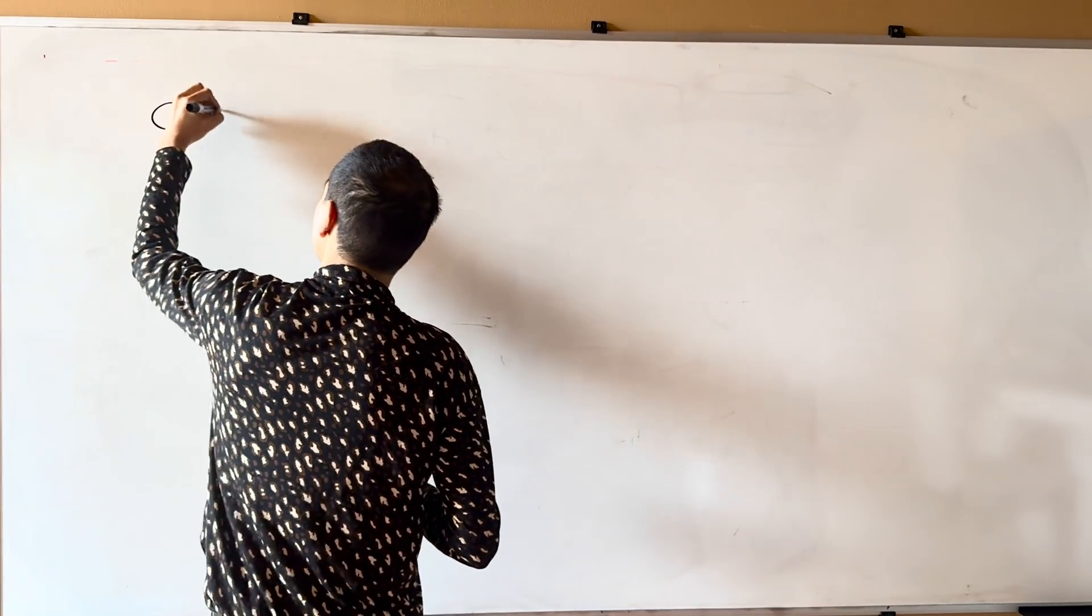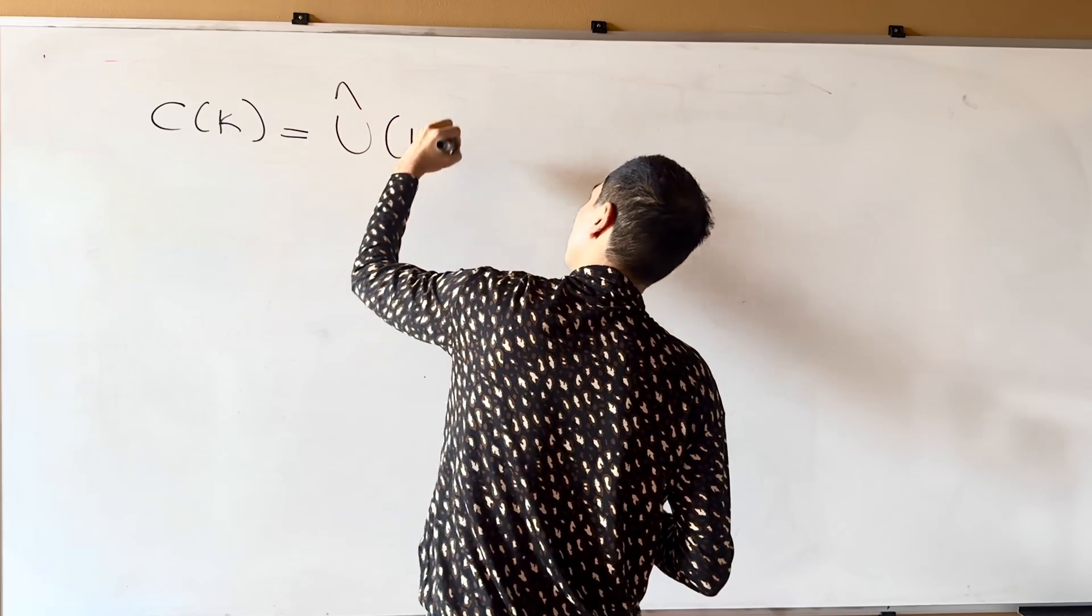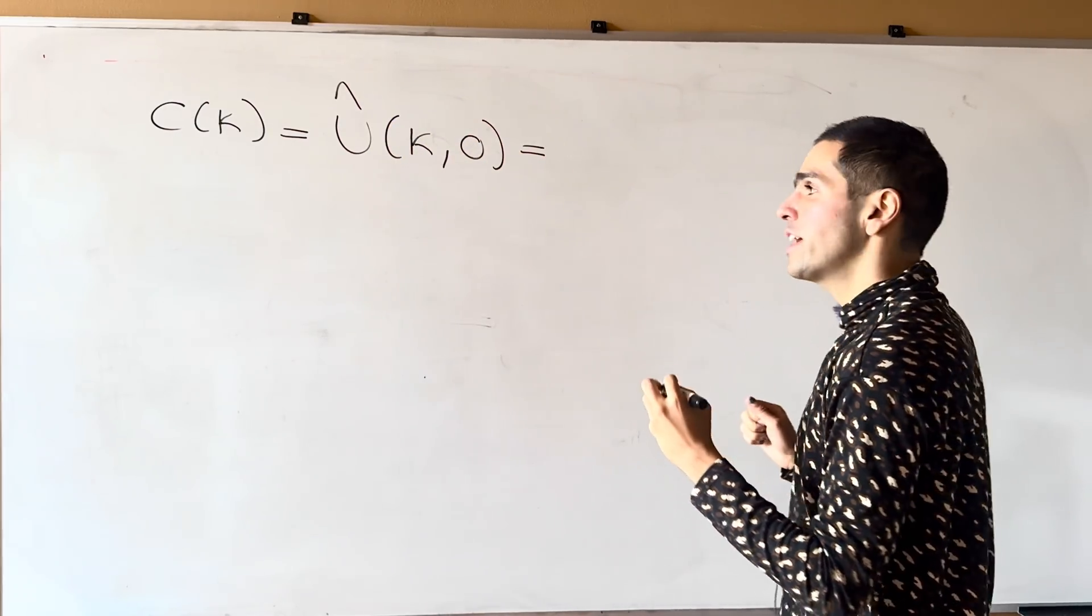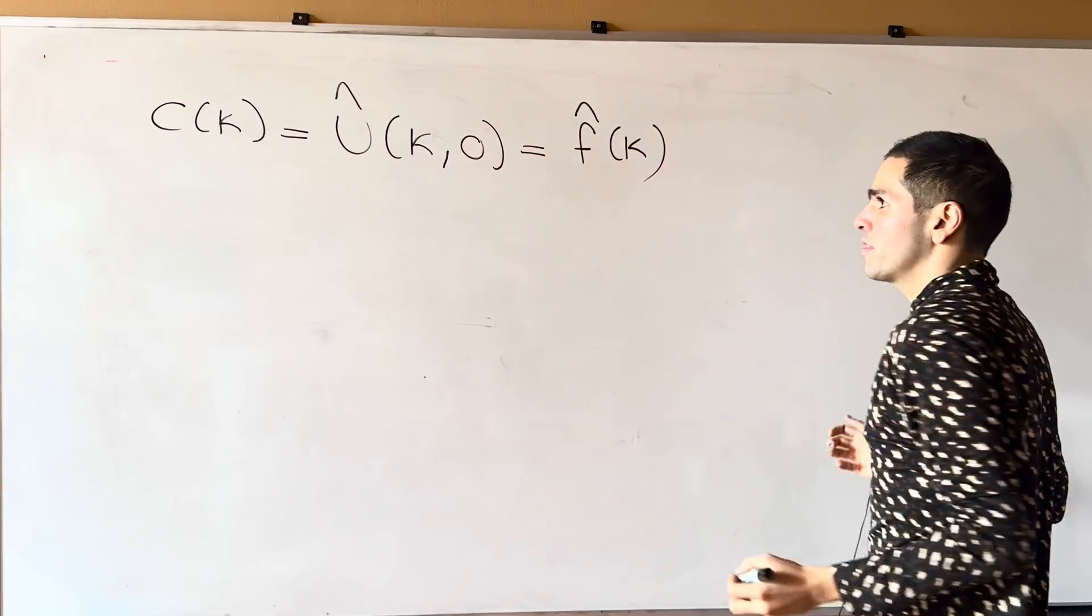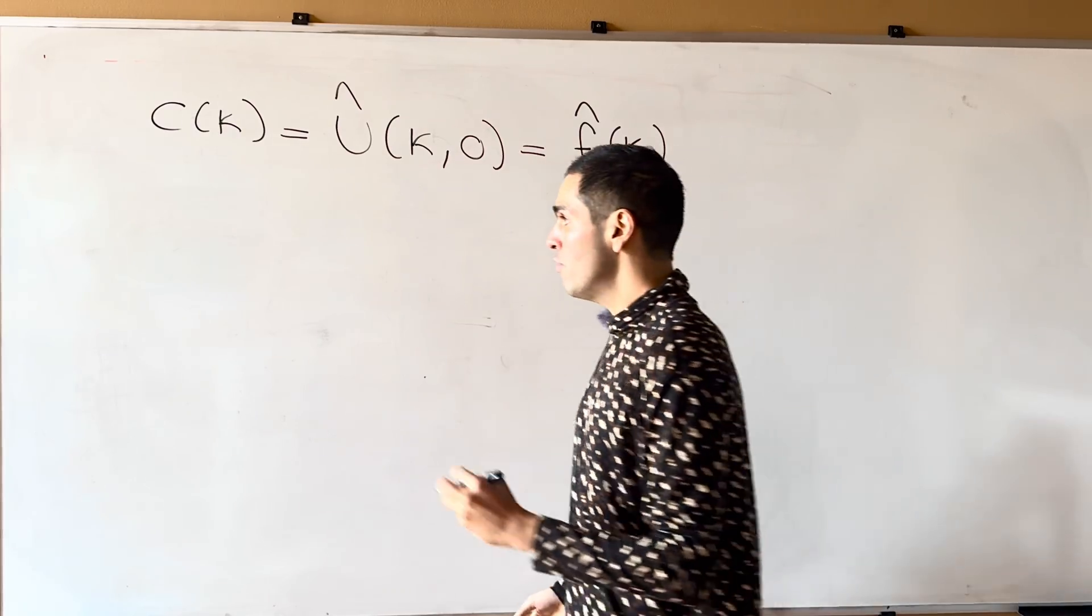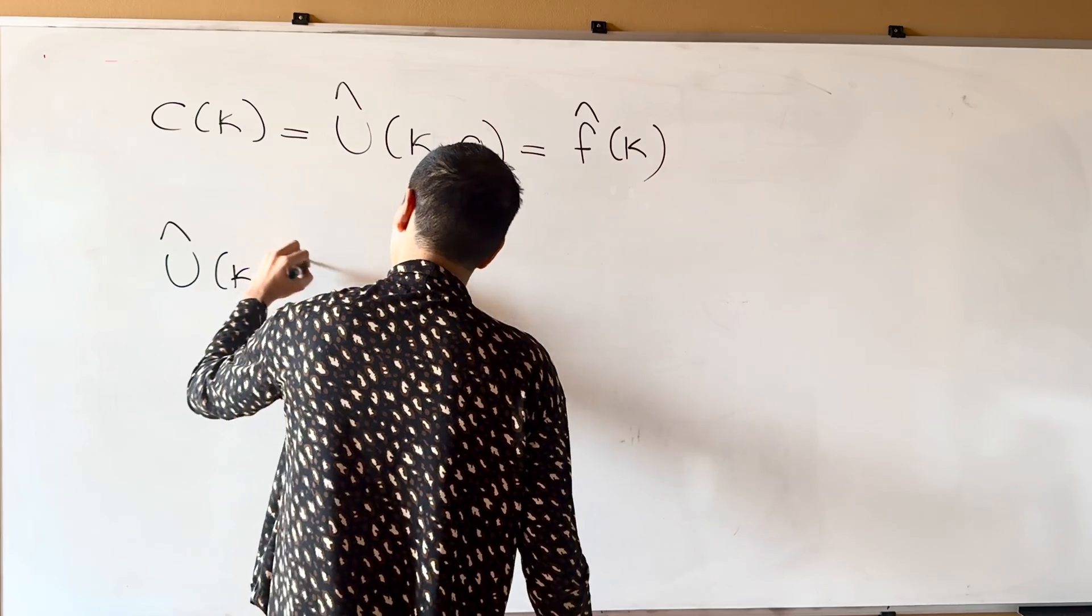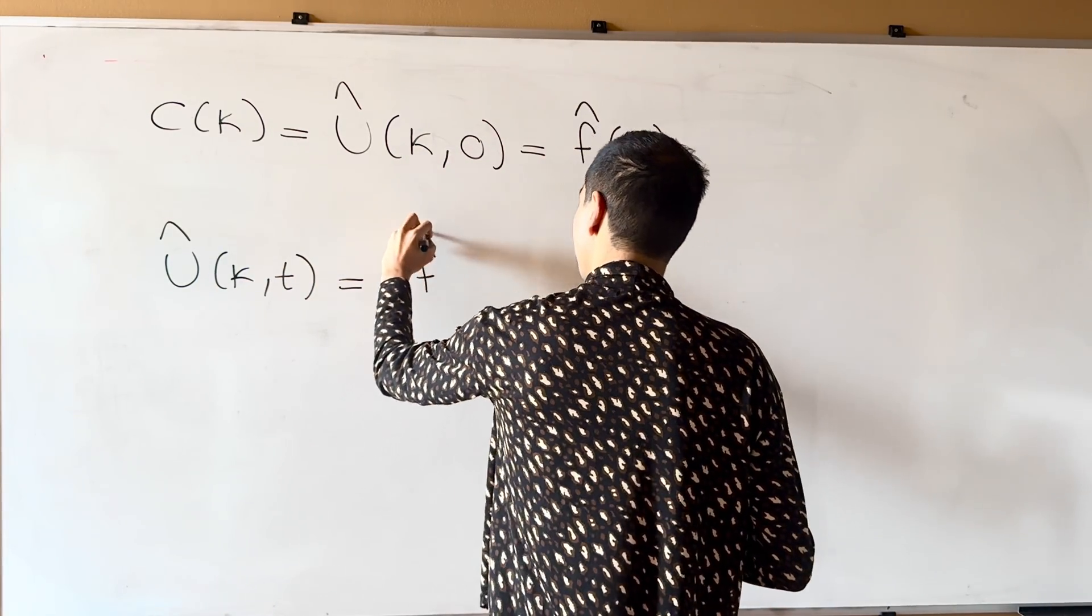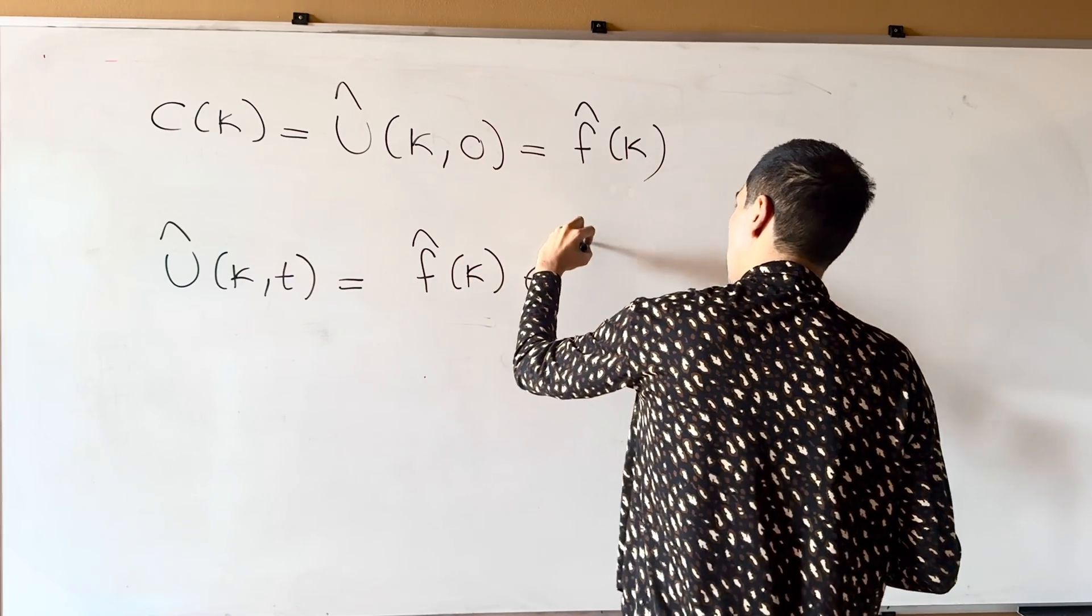So once again, to summarize, C kappa is U hat kappa zero, and in a previous video I calculated this to be F hat of kappa. And so the nice thing is, we now have a formula for U hat, because U hat was C kappa, which now is F hat kappa, and then E of minus kappa to the fourth.